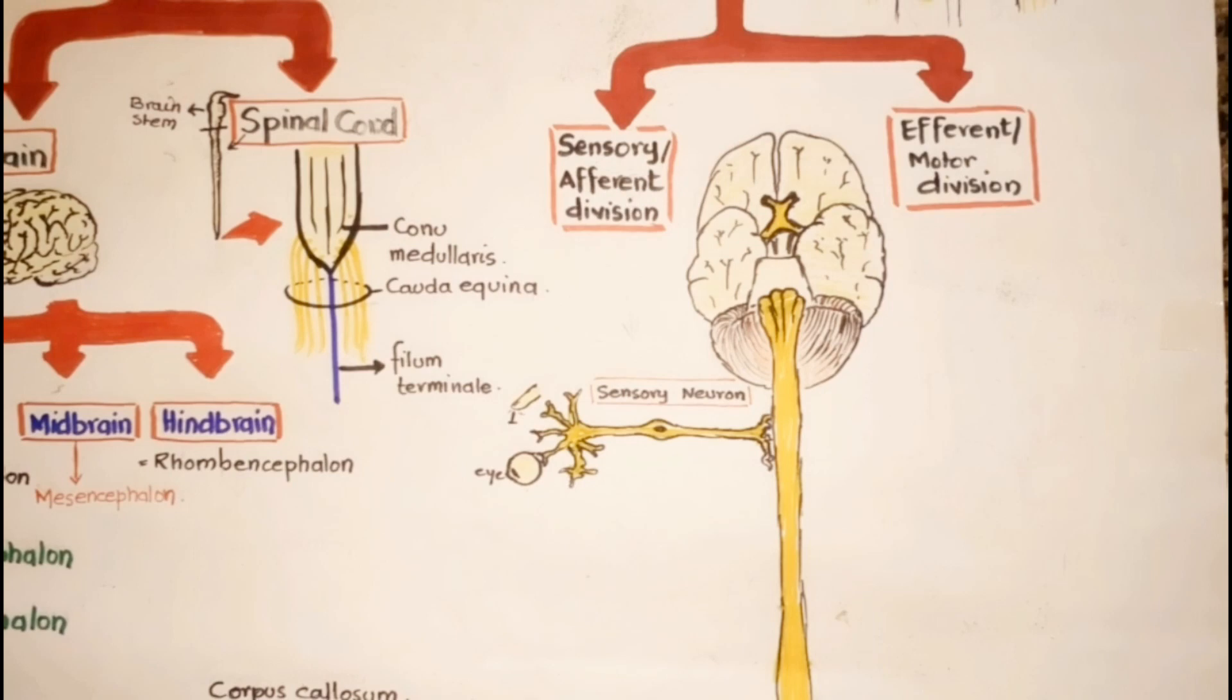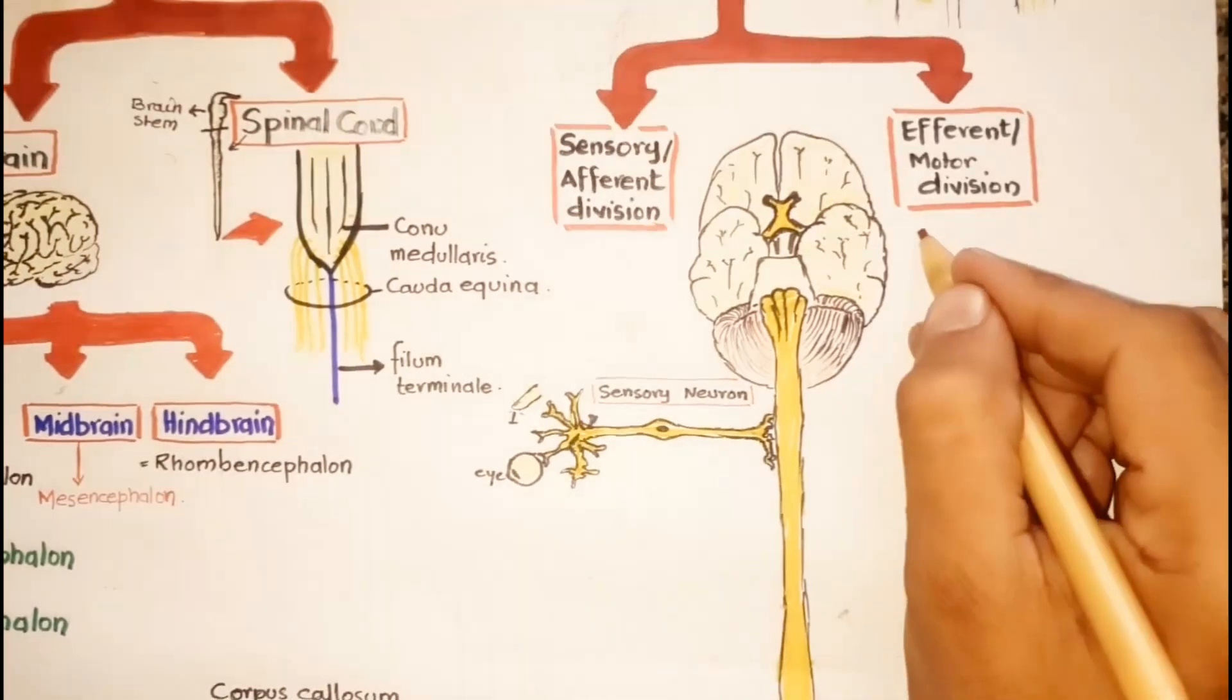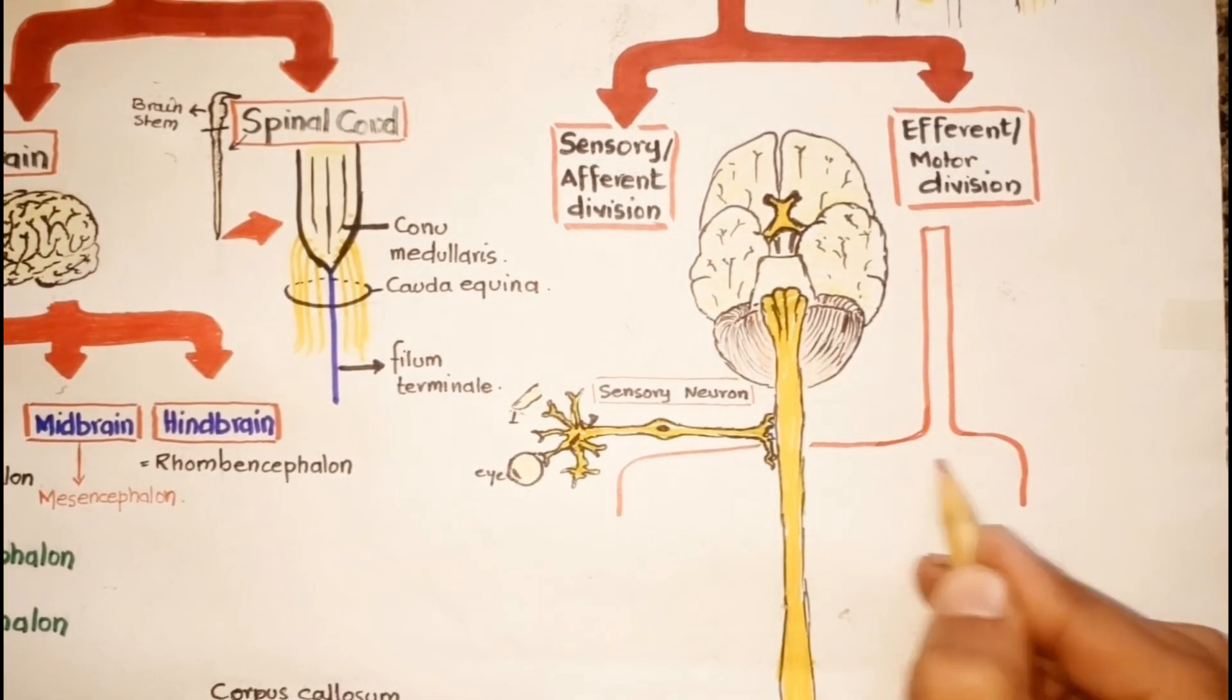The efferent or motor division is composed of neurons that carry signals away from the brain and spinal cord to the peripheral tissues. The motor or efferent division is further divided into two major functional divisions.